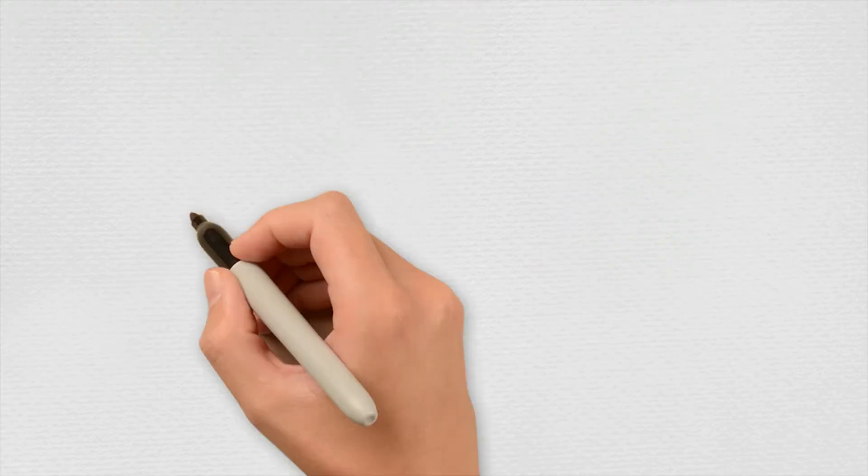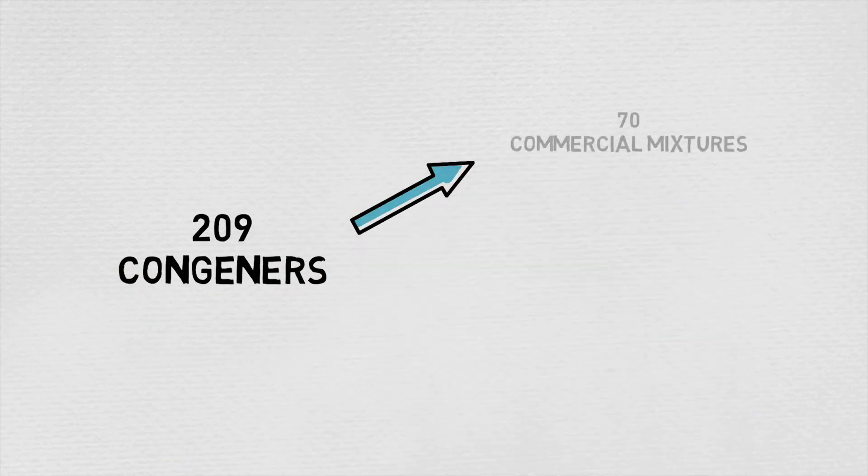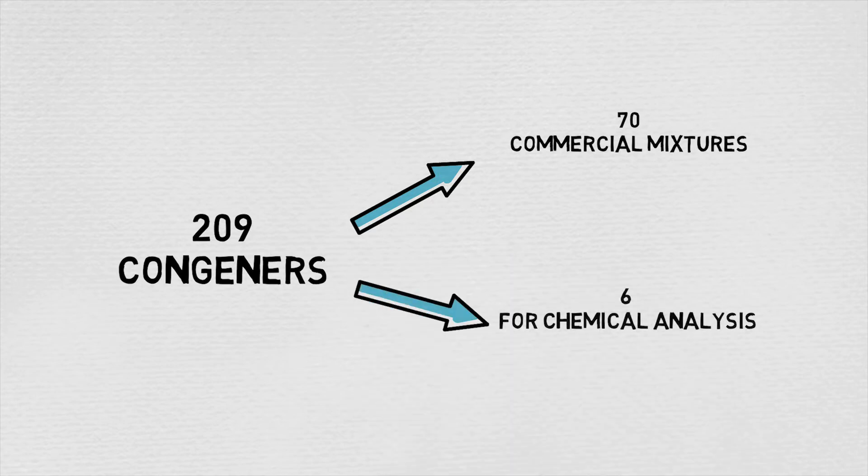A total of 209 PCB congeners are possible, but only approximately 70 of these compounds have been found in commercial mixtures. Six lead congeners are used for chemical analysis.